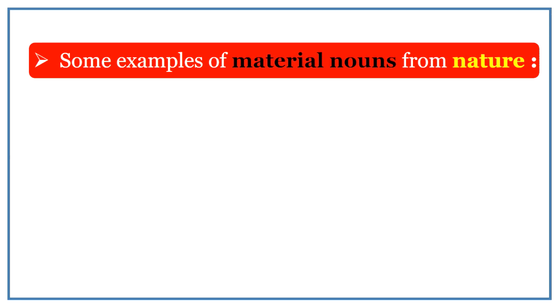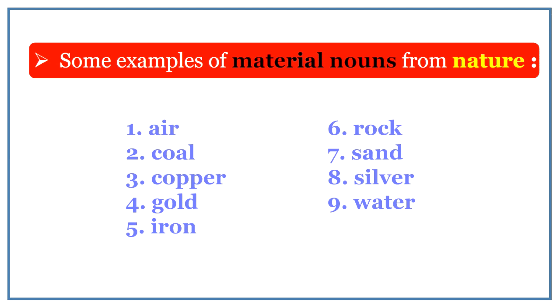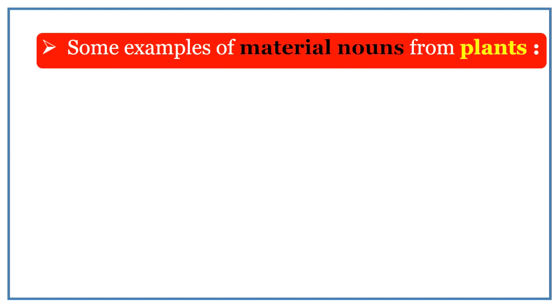Here are some examples of material nouns from nature, like air, coal, copper, gold, iron, rock, sand, silver and water.